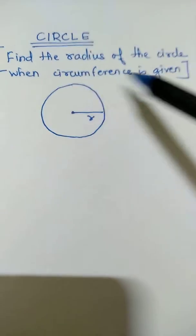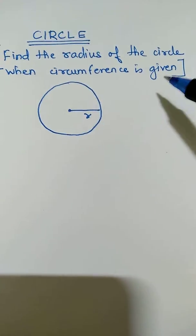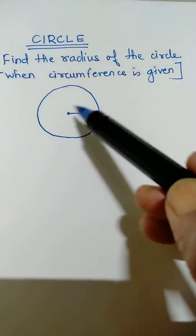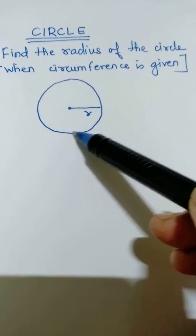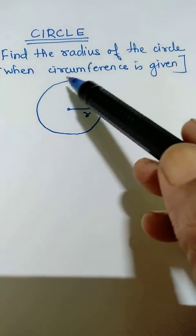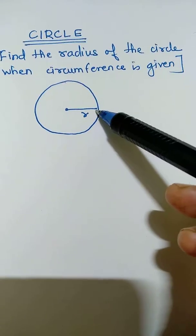Today we will see how to find the radius of the circle when circumference is given. You know what is circumference? Circumference is the distance along the boundary of the circle. This is its radius.